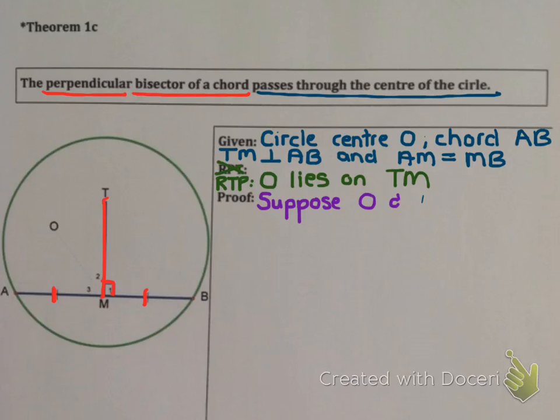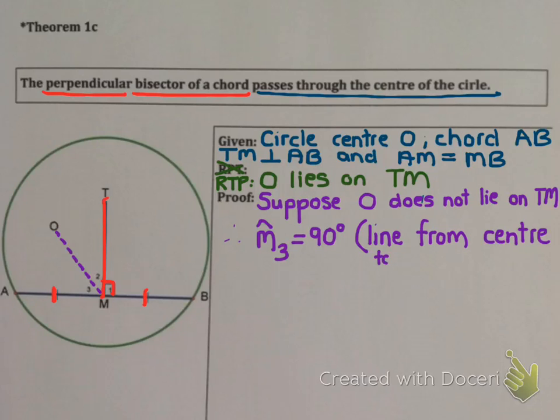So let's suppose, let's assume that O doesn't lie on TM. So O is the center but it does not lie on TM. If it doesn't lie on TM it means it must be off at some angle but it is the center of the circle. Now this means that angle M3 is 90 degrees. Why would angle M3 be 90? Because O is the center and you have a line from O to the midpoint of a chord, which was theorem 1B. The line from a center to a midpoint of chord has to be perpendicular. Which means they're telling us that angle M3 is 90 degrees. But that's not possible.